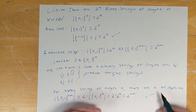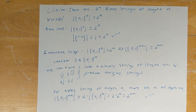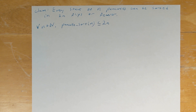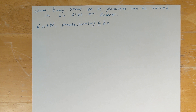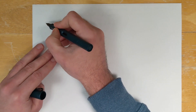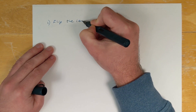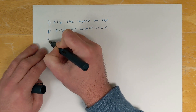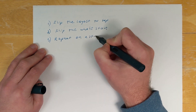Our inductive step is proven, and we've shown our claim holds for all natural numbers n. For our next example, we're going to go back to the pancake problem. Recall that the pancake problem requires taking some stack of pancakes and sorting it so the largest pancake is on the bottom and the smallest is on top. Perhaps you noticed a general procedure: to sort a stack, you first flip the largest pancake to the top, then flip the whole stack so the largest is on the bottom, and then repeat on the stack of size n minus 1.